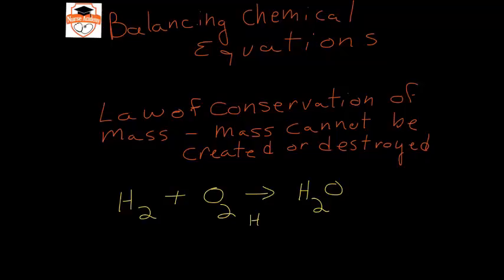Let's say that we count we have two hydrogens on the reactant side of the equation and we have two hydrogens on the product side of the equation. But if we're looking at oxygens, here we have two oxygens on the reactant side, but on the product side we only have one.